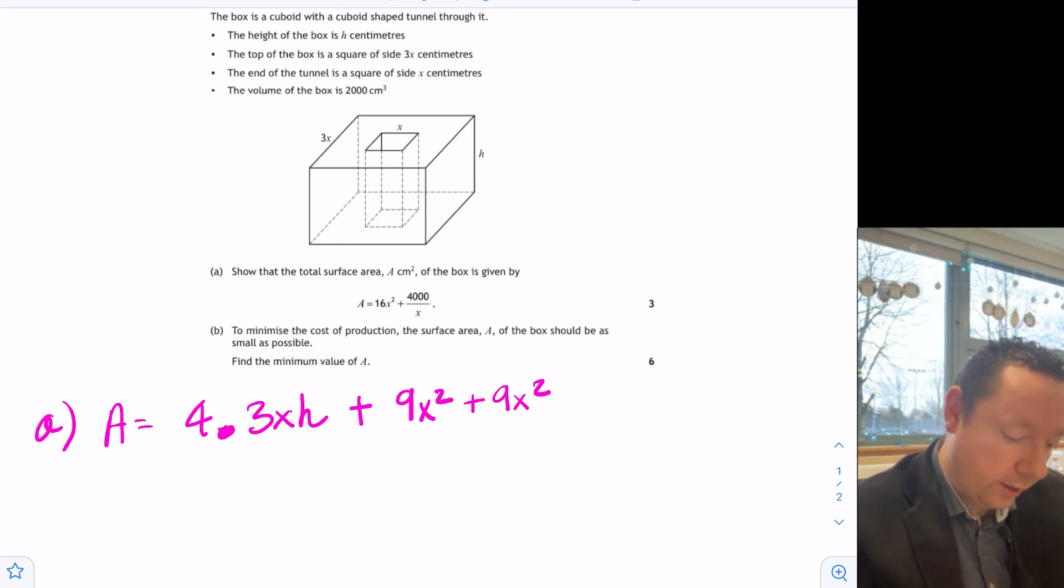18x squared straight away. But then you've also got a hole in the top. Which is x squared by x squared. And I've got 2 of them. So take away 2x squared straight away. And then the bit that everybody always forgets. I almost forgot it. There's a surface inside this tube as well. So I need to work out what that surface is. Well, it's going to be 4 of them. And it's just going to be x times h. So plus 4xh.